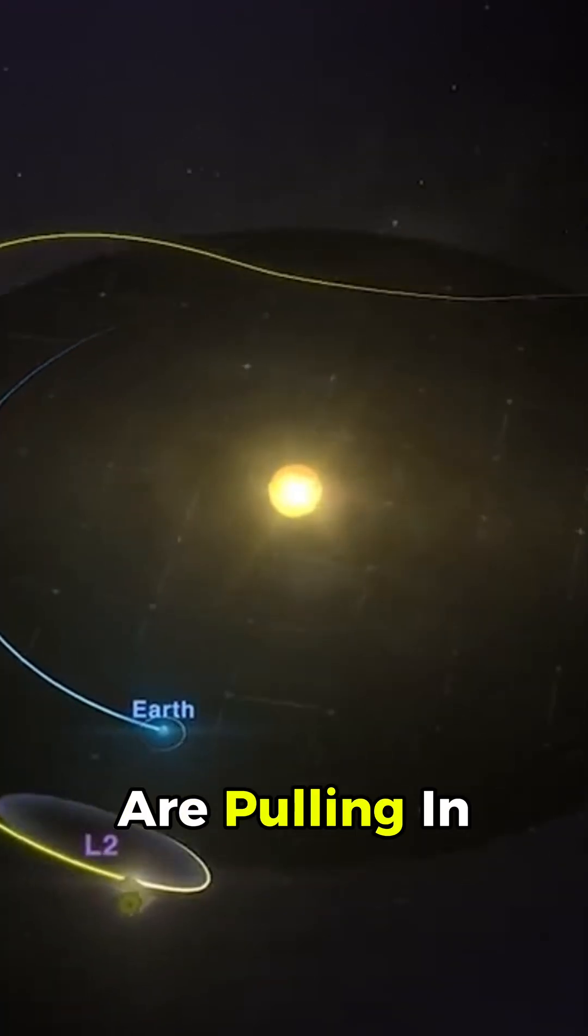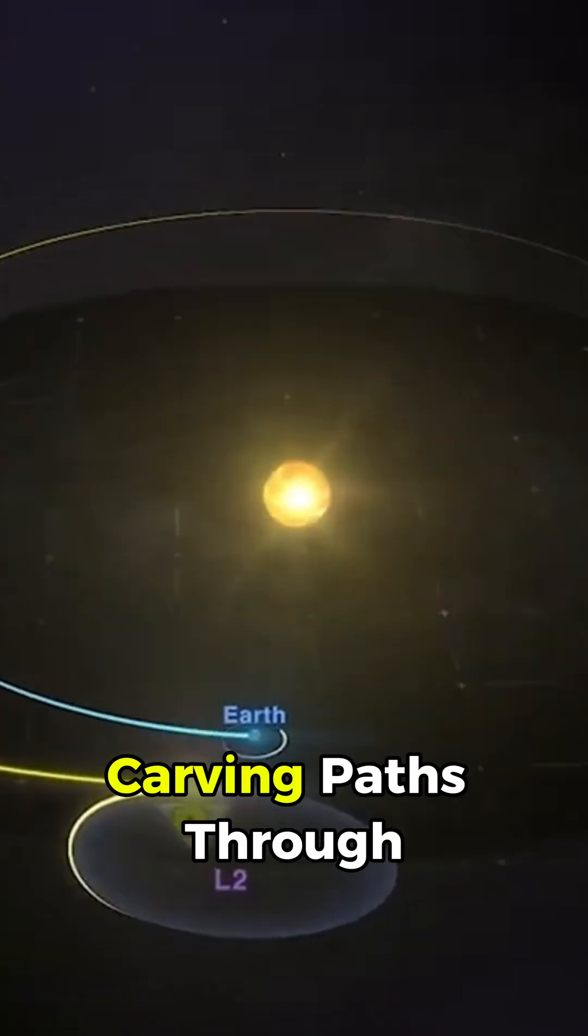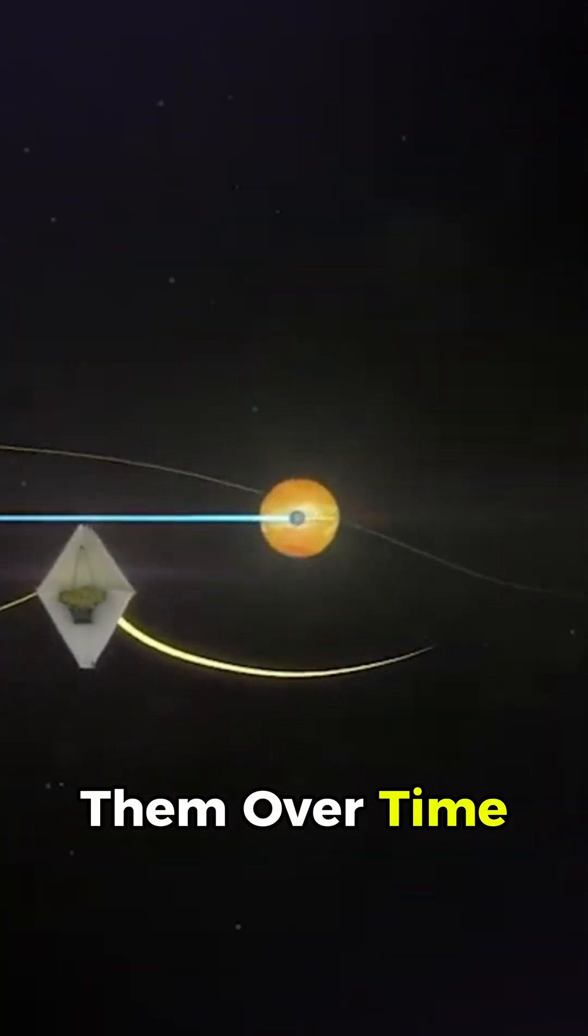Researchers think these young worlds are pulling in gas and dust, carving paths through the disk as gravity shapes them over time.